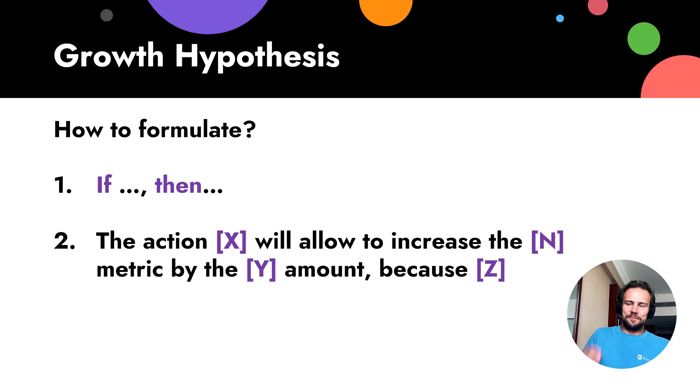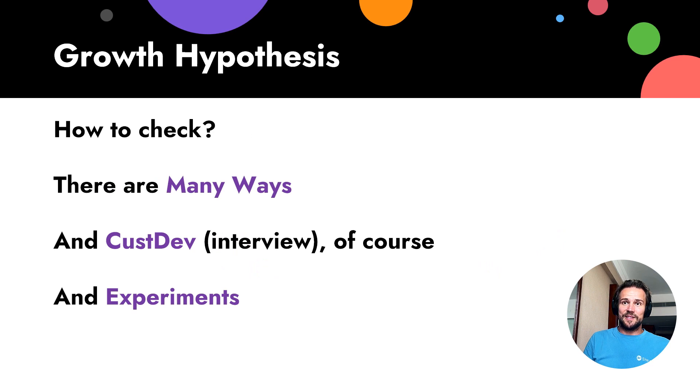Growth hypotheses are usually tested by experiments, but of course there are many ways how we can check the growth hypothesis. Growth hypothesis means we need some metrics to change. It means product exists and we have existing customers and we need to increase some metrics. Growth hack some metrics. And of course, many ways. CustDev, of course. And experiments, we will talk about this later. Experiments is the most interesting part of growth hacking at all, I think.